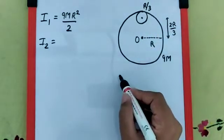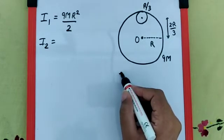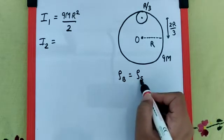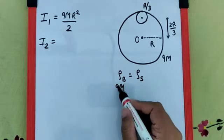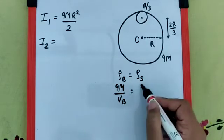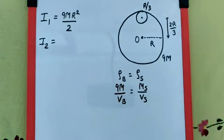Now, we can say density is going to be the same. So density of the bigger disk equals density of the smaller disk, which means mass of the bigger disk, 9m, upon volume of the bigger disk equals mass of the smaller disk upon volume of the smaller disk.